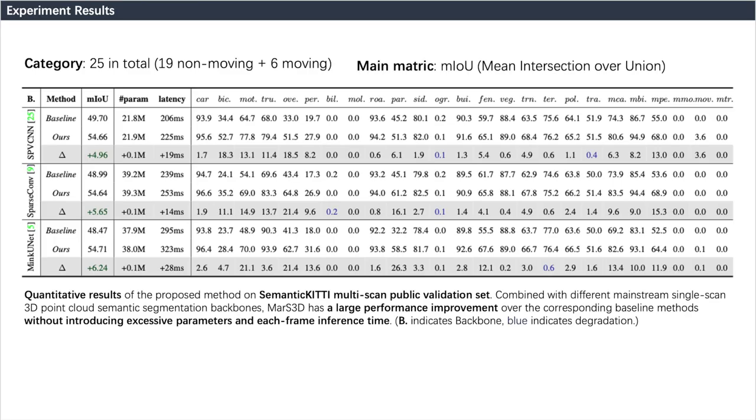For experiments, we first choose three single-scan segmentation models as backbone networks and compare our method with baseline methods. As shown in the table, the performance of our method is significantly improved compared to the baseline method. Furthermore, our method does not introduce much additional parameter volume and inference time.